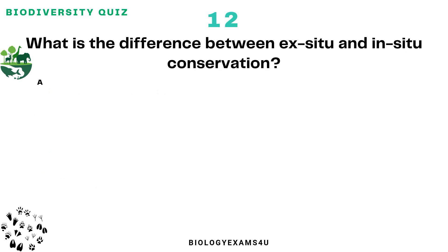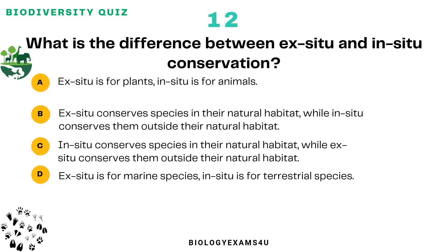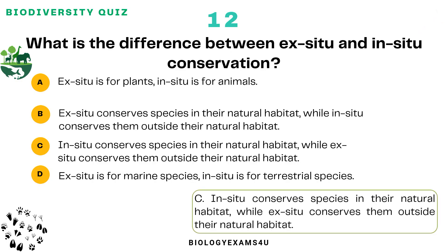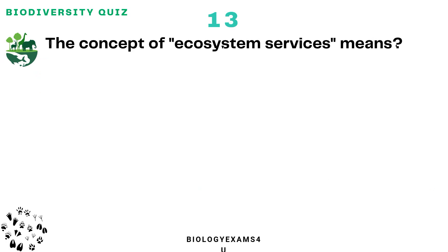Question number 12: What is the difference between ex-situ and in-situ conservation? Option A: Ex-situ conservation is for plants, in-situ for animals. Option B: Ex-situ conserves species in their natural habitat while in-situ conserves them outside their natural habitat. Option C: Ex-situ is for marine species whereas in-situ is for terrestrial species. The correct answer is: in-situ conservation is within the natural habitat, whereas ex-situ conserves them outside the natural habitat.